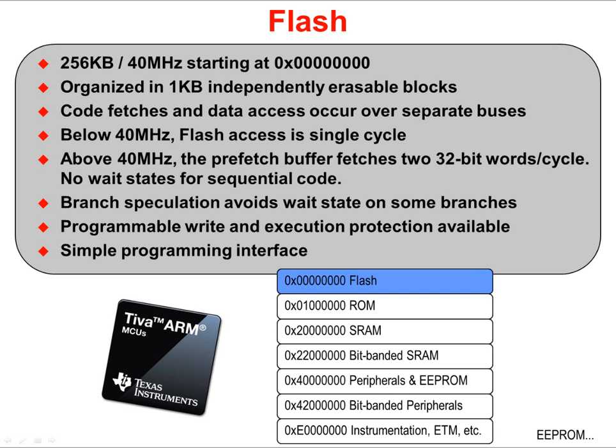The issue will be branches. The part has branch speculation so that on one direction of the branch, it prefetches the instruction in that direction, avoiding a wait state. Your code will incur a wait state only on one side of branches, allowing 40 MHz flash to operate at near 80 MHz speeds.